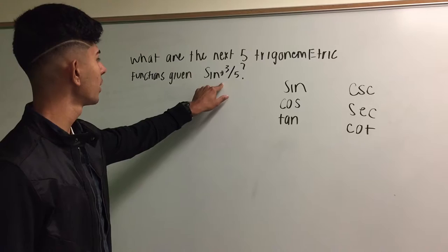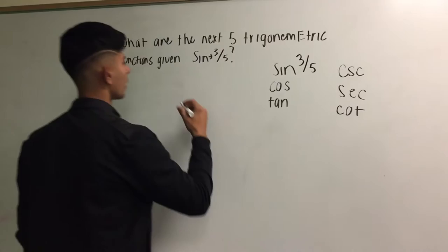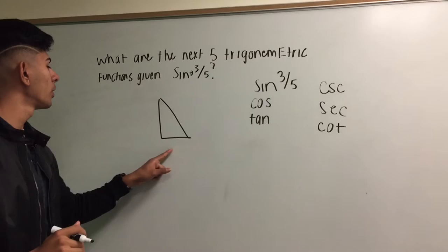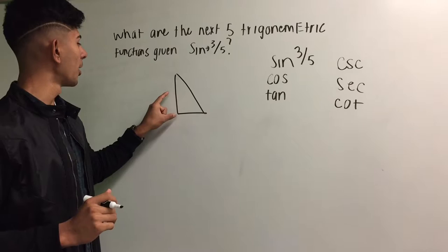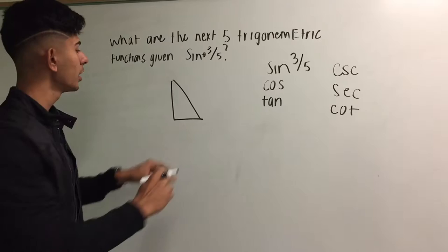So our problem says that we have sine is 3 over 5. So we can automatically fill this in. Let me draw the right triangle for you real quick. On the right triangle, different sides have their different names. So this one would be opposite.